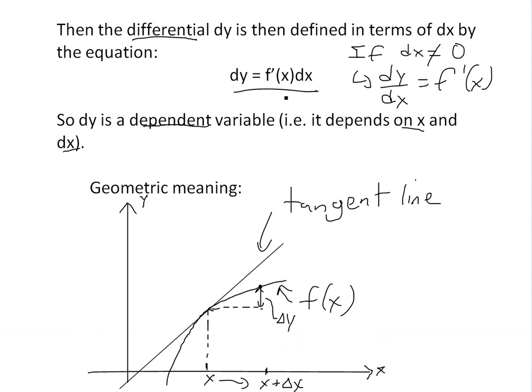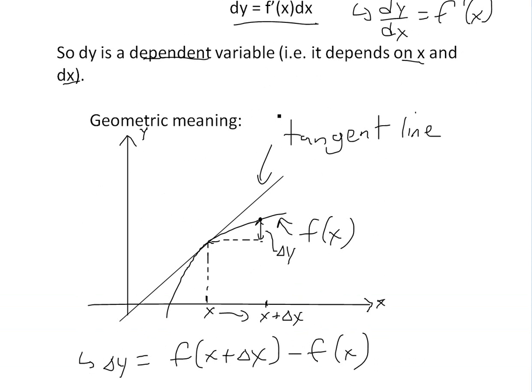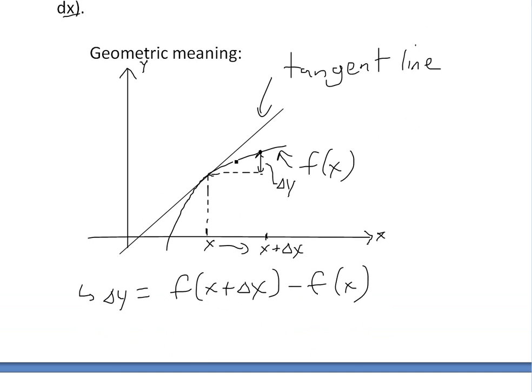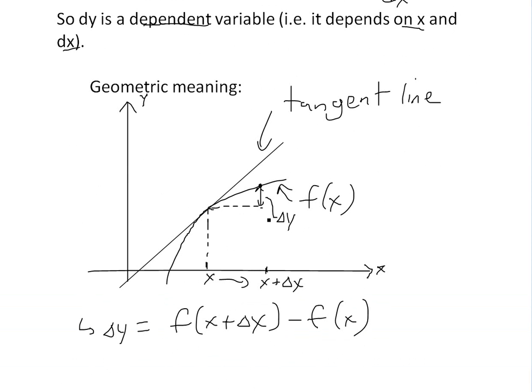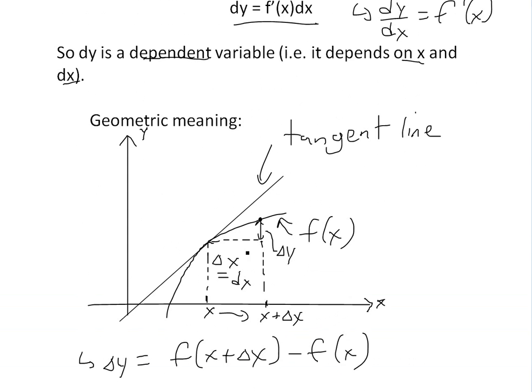But since basically this derivative right here, f of x, this is actually just a slope of this tangent line. So what this dy means, in this case right here, the geometric meaning is basically initially, this would be delta x, this difference right here. But this just equals to d of x. So it's the same thing.